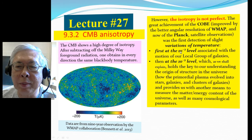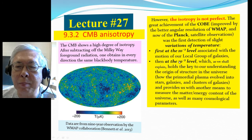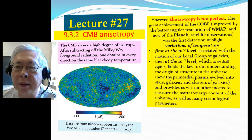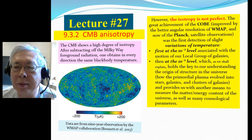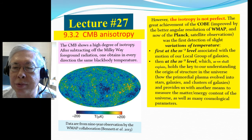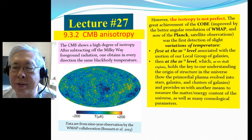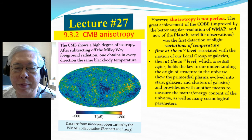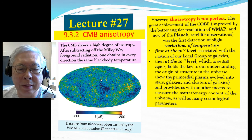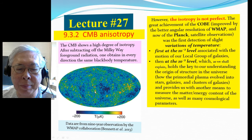First, there's the one part in 1,000 level associated with the motion of the local group of galaxies. Then there's one part in 100,000, which holds the key to understanding the origin of structure in the universe — how the plasma evolved into stars, galaxies, and clusters of galaxies. It also provides us with another means to measure the matter-energy content of the universe, as well as many other cosmological parameters. Here's a picture of 9-year observations by the WMAP collaboration.